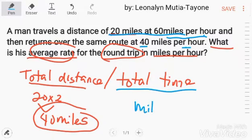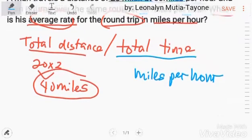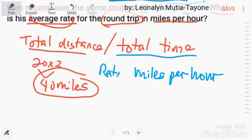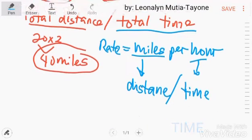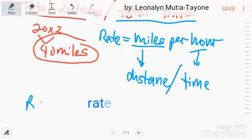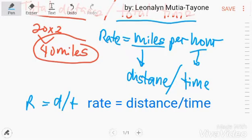So, miles per hour. Rate yan, diba? Miles. Ano ba yung miles? That is distance. Per. Ano ba yung hour? And that is time. So, ito na yung formula mo, which is rate equals distance over time.